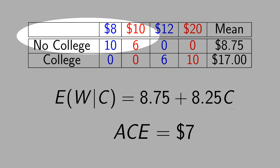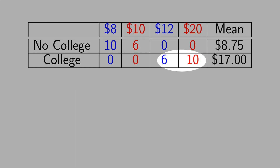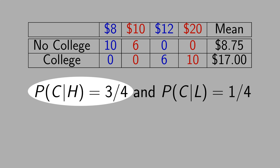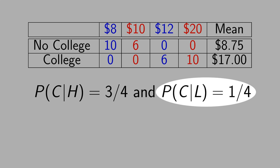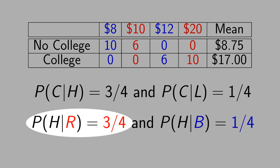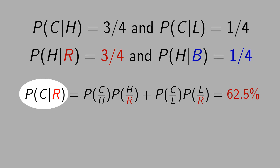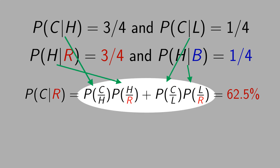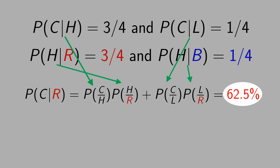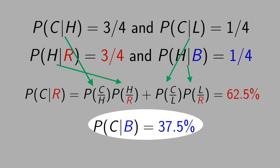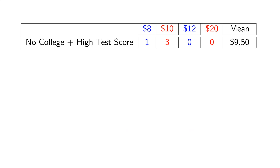Why does this happen? We have more red people with a college degree, and the impact of college degree for red people is higher than for blue people. In the no-college category, blue people are overrepresented — 10 against 6. Now let's understand why red people are more likely to get a college degree. The probability of getting a college degree given a high mark in a test is 3/4, and given a low mark it is 1/4. Red people have more skills: the probability of getting a high mark given you are red is 3/4, and given you are blue it is 1/4. With these probabilities, the probability of getting a college degree given you are red is 62.5%, and given you are blue is only 37.5%.